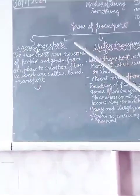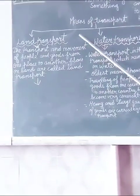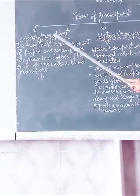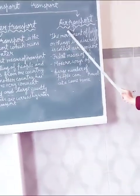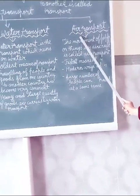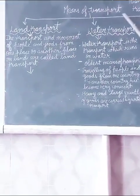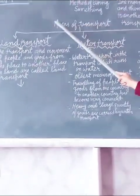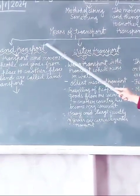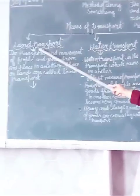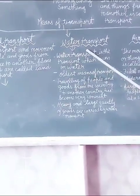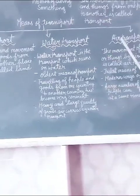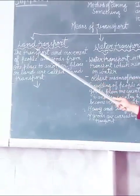There are three means of transport. Number one is land transport, second is water transport, and third is air transport. Now let me describe what is land transport.